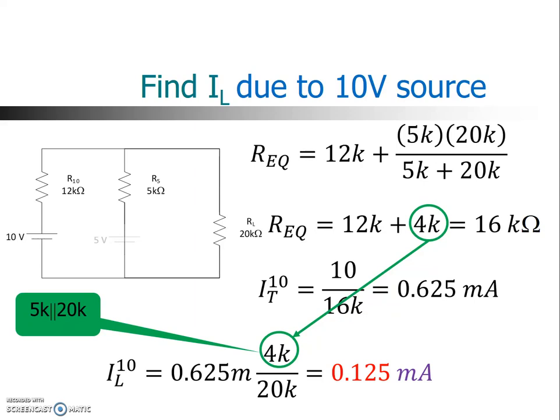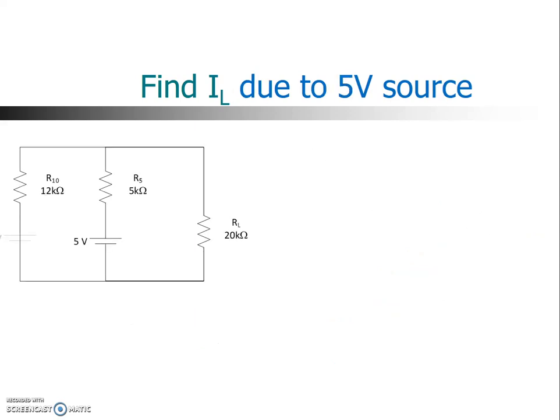So we're going to now do the same thing for the 5-volt source. So we put the 5-volt source back in the circuit, and we remove the 10-volt source. Notice when we remove the 10-volt source, we replace it with a short circuit. So now the 5-volt source has the 5K resistor in series, and then we have the 20K and the 12K in parallel.